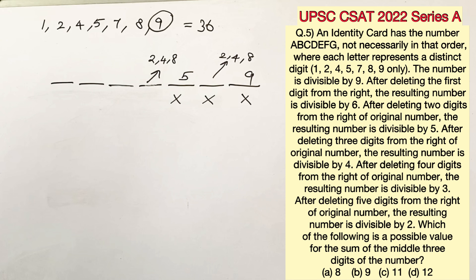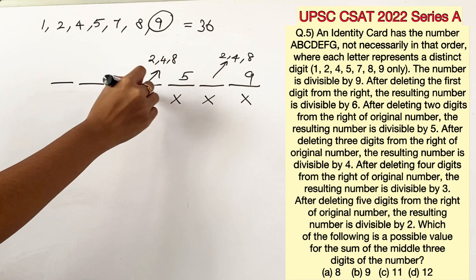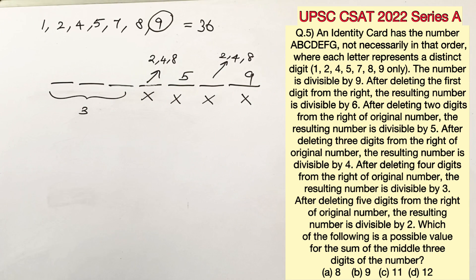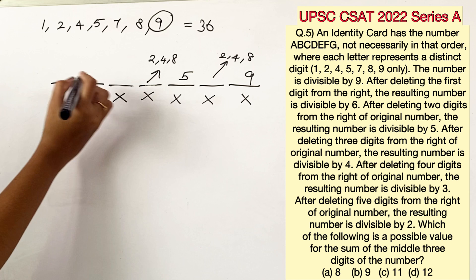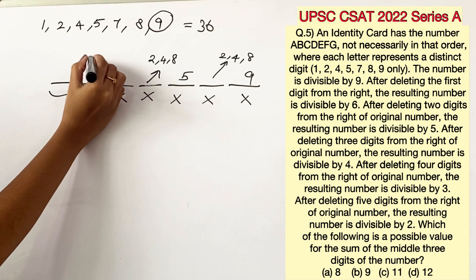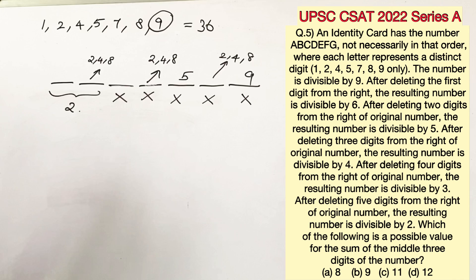The next statement says after deleting 4 digits from the right the number is divisible by 3. We know the divisibility rule of 3 which is the sum of the digits should be divisible by 3. But for now let's move on to the next statement which is going to make this task easier. So it says after deleting 5 digits from the right the resulting number is divisible by 2 which means this should be an even number 2, 4 or 8.